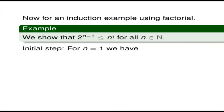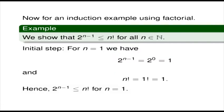The initial step: for n equals 1, we have 2 to the power n minus 1 equals 2 to the power 0, which is equal to 1. And n factorial is just 1 factorial, which is equal to 1. Notice that I'm taking the left and right-hand sides separately, so it's entirely clear that I have shown they are equal. So we've shown that the inequality is true for n equals 1.